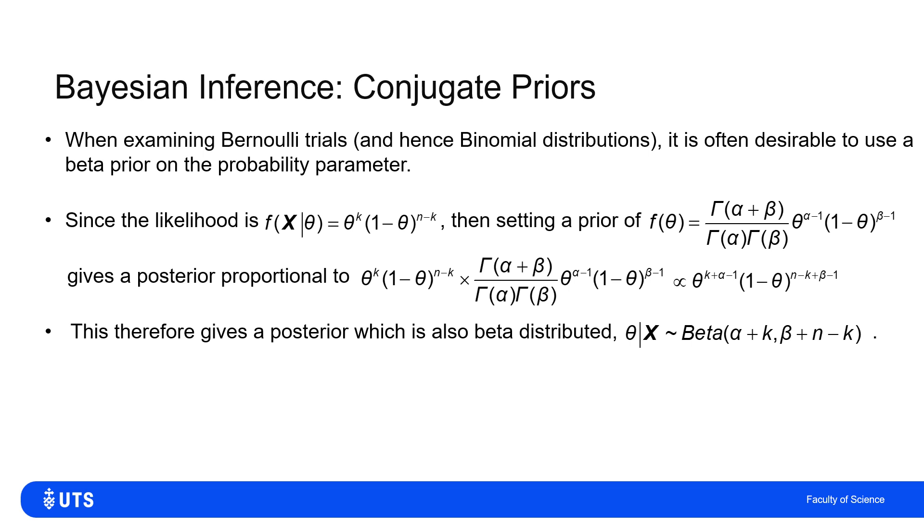What this does tell me is that my posterior—what I now think about θ in light of the new set of observations—can be described by a beta distribution, just updating the α to α + k and updating the β to β + n - k.